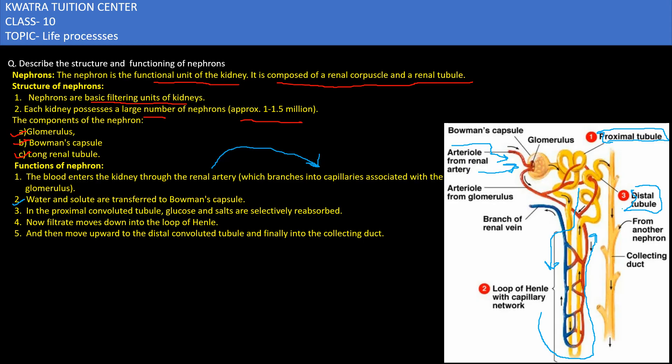The distal tubule finally goes into the collecting duct. This was the structure and functions of nephron. Here we have to know how the blood goes into the nephron and where is the glucose absorbed and where is the salt absorbed and finally it moves as urine. This was the answer to the question. Thank you.